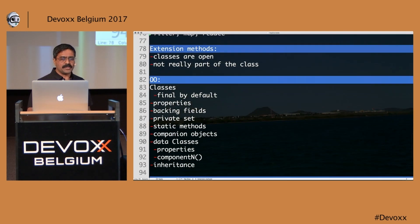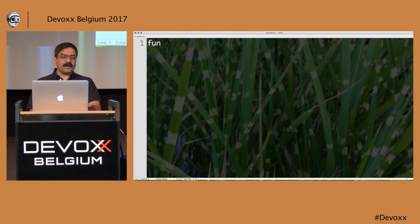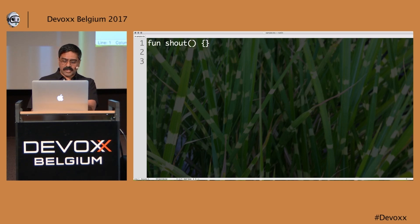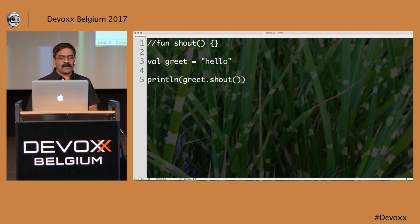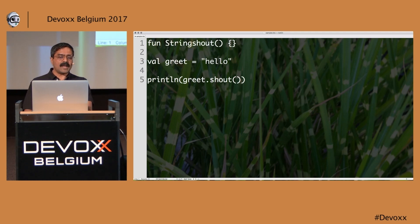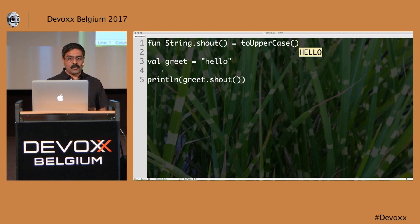Let's talk about extension methods — something I really enjoyed in C#. I'm going to create a function called shout. I want to call greet.shout where greet = 'hello', but shout doesn't exist on the object. I go back and specify it on the string class: 'fun String.shout()' and simply return 'this.toUpperCase()'. Now when I run this code, it converts to uppercase. Be careful though — this is not literally adding it to the class; it's a compiler gimmick that rewires the call site.